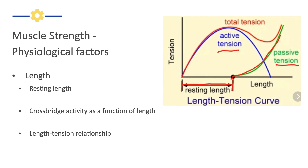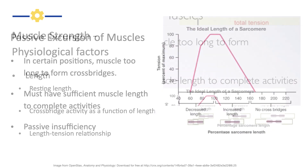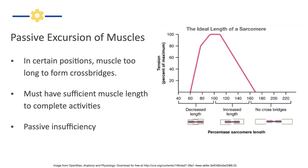As we stretch a muscle further and further, even though the muscle tissue itself can't generate as much force, the connective tissue component starts getting tighter and tighter, and we do get an increase in total tension. So the total tension follows the red curve, as we stretch a muscle further and further. Muscle length, obviously, is going to dramatically affect the ability of the muscle to generate strength.